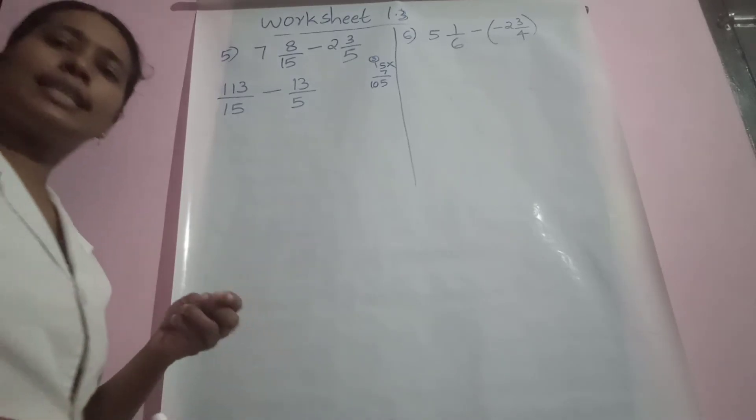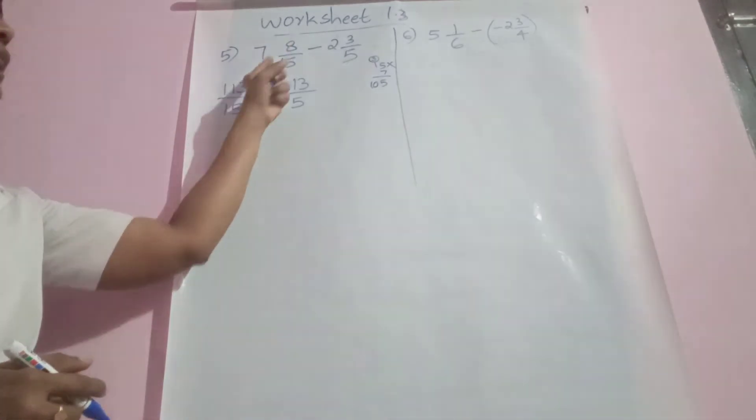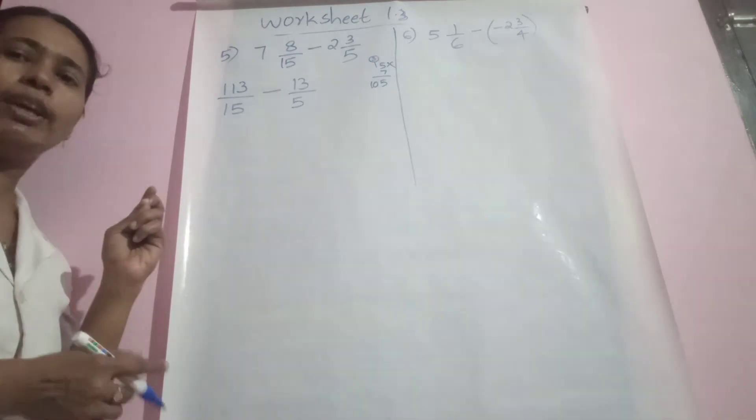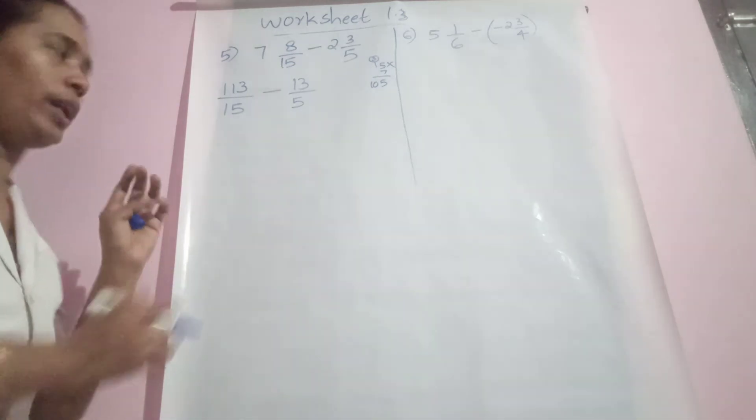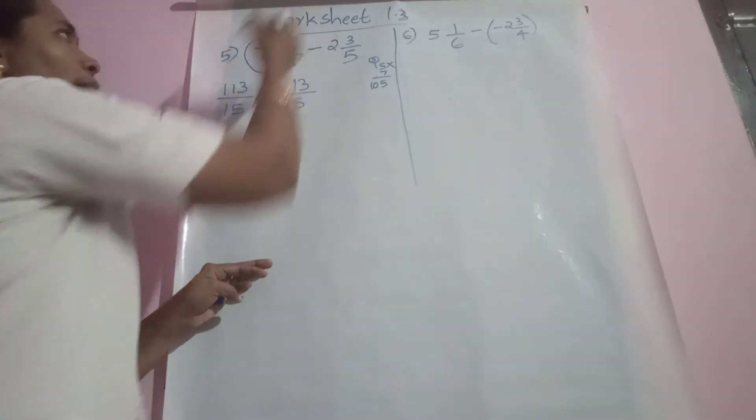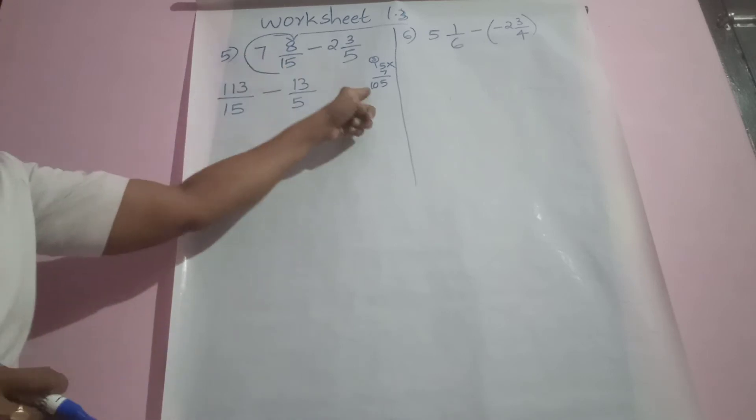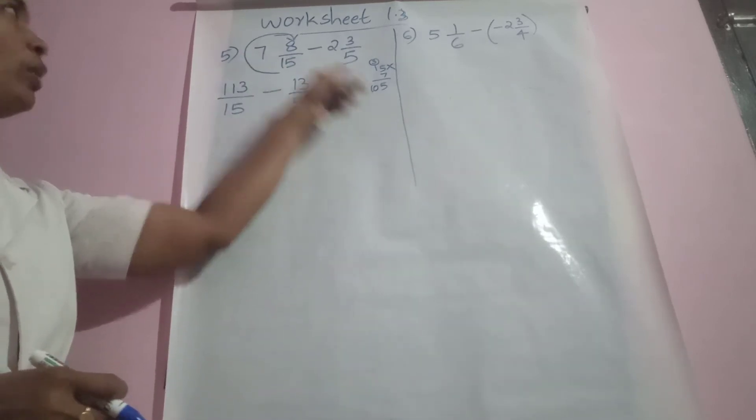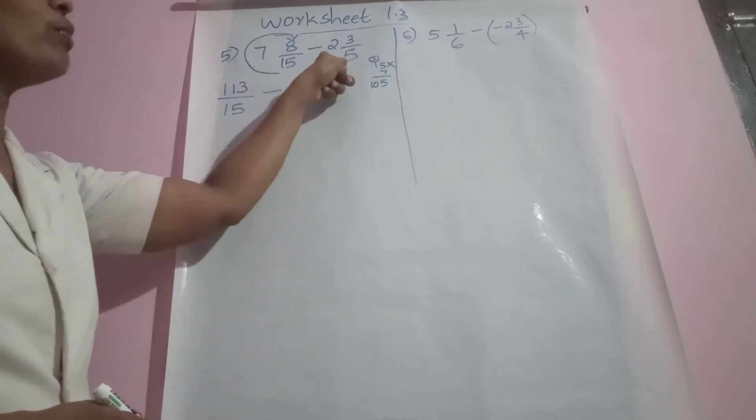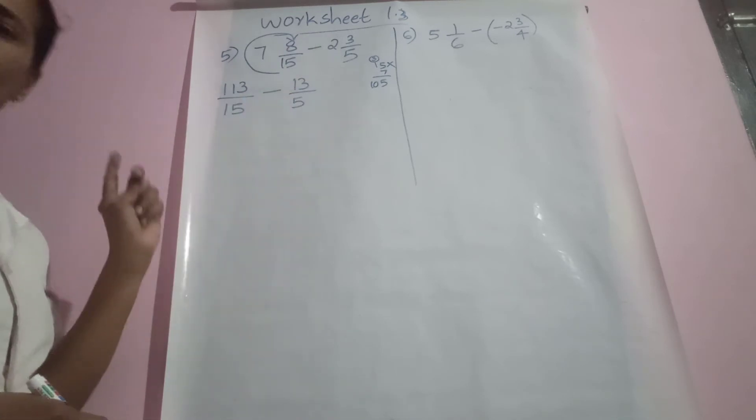Let us continue with our 5th question: 7 8/15 minus 2 3/5. Mixed fractions are given, so convert them into improper. Start from 15 and try to reach 8: 15 into 7 then plus 8. 15 into 7 is 105, plus 8 is 113/15 minus this number which becomes 5 times 2 is 10, 10 plus 3 is 13/5.